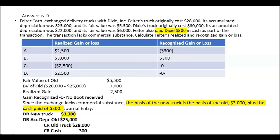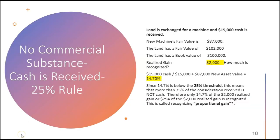Anticipating the next question: what's the basis of the new asset? Start with the book value of the old ($3,000) plus cash paid ($300), giving a new asset basis of $3,300. The journal entry credits cash of $300, credits the old truck at $28,000, debits accumulated depreciation of $25,000, and debits the new truck at $3,300. Book value of old ($28,000 − $25,000 = $3,000) plus cash paid ($300) equals the new asset's basis of $3,300.